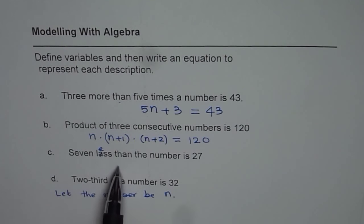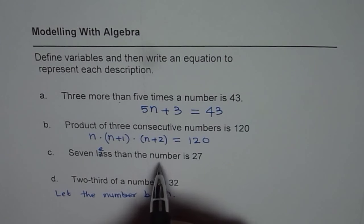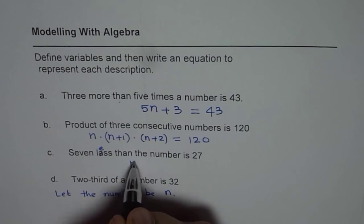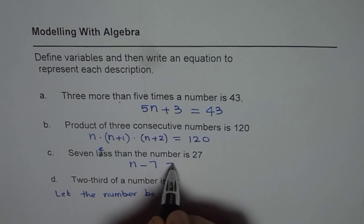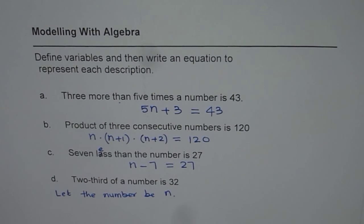7 less than the number is 27. So we should write number first. Number minus 7 is equal to 27. That is the correct statement. If you write 7 first, you will get incorrect answer.